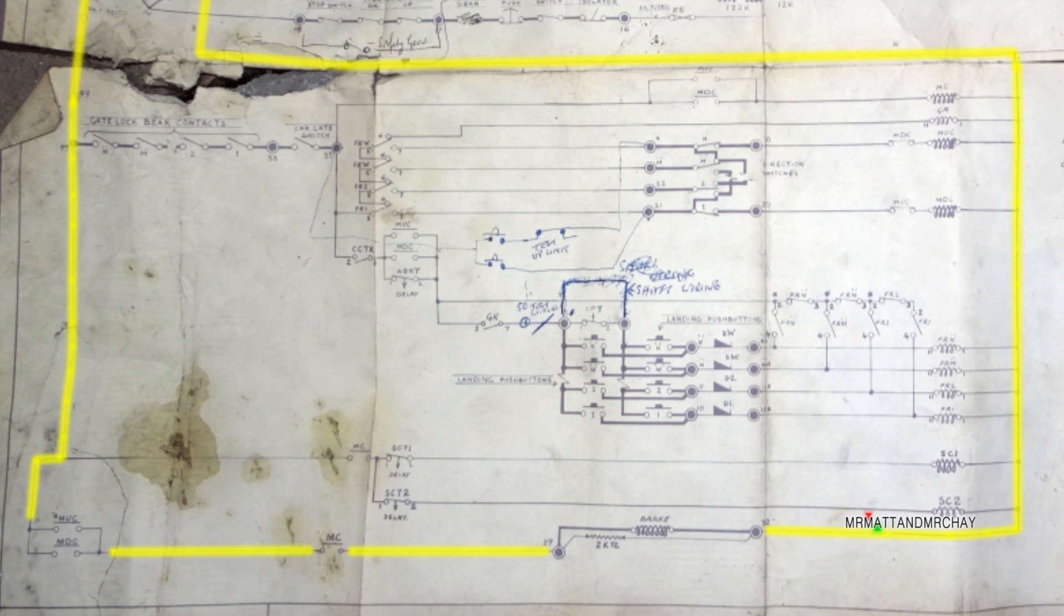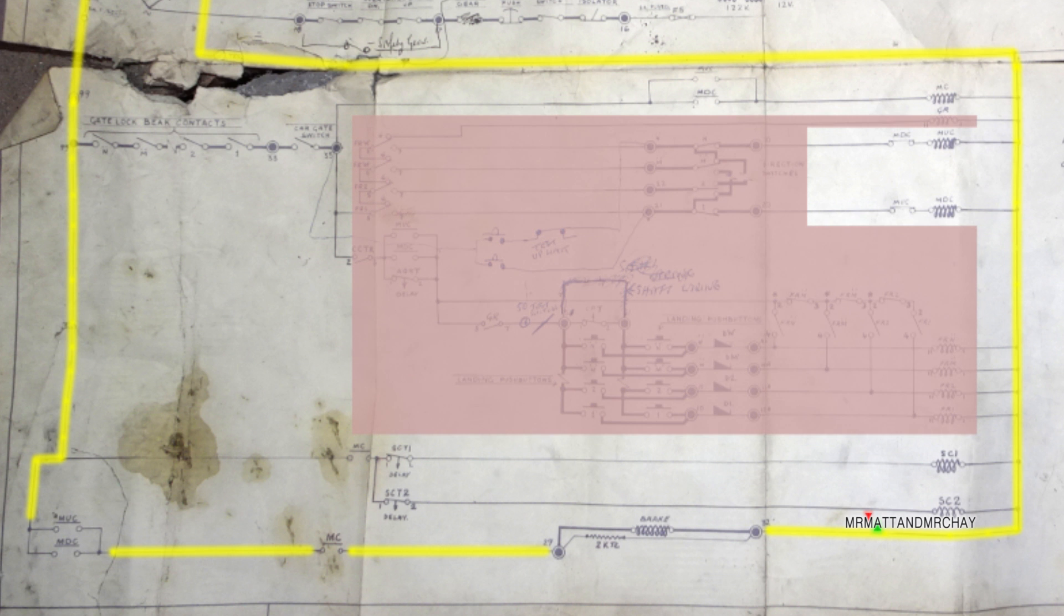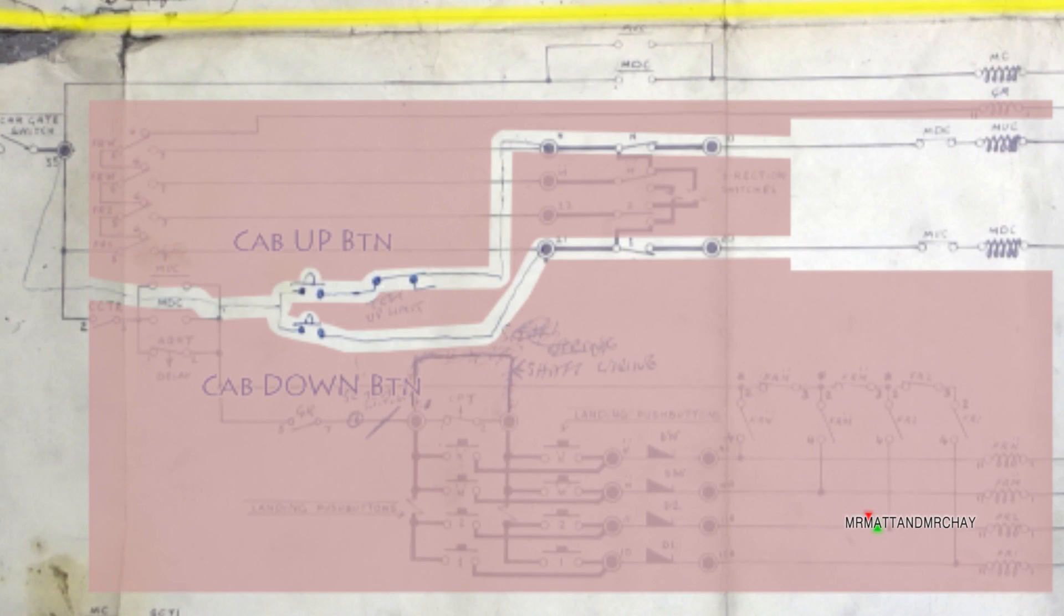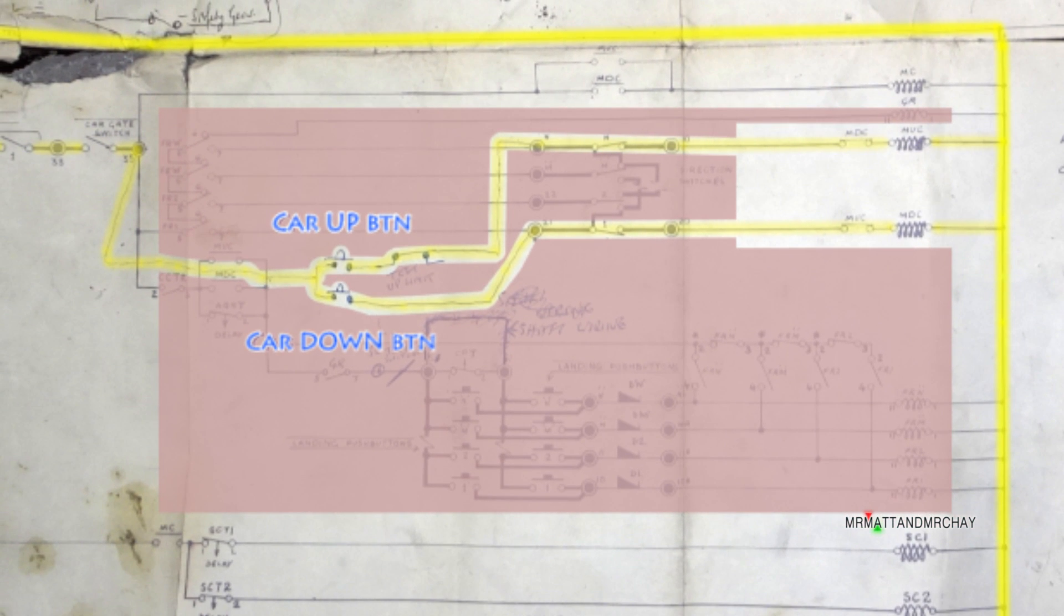As this goods lift doesn't have call buttons, this whole section is for a different lift. Here is the bit that does exist, that's the up and down buttons inside the lift car, because that's all it has.